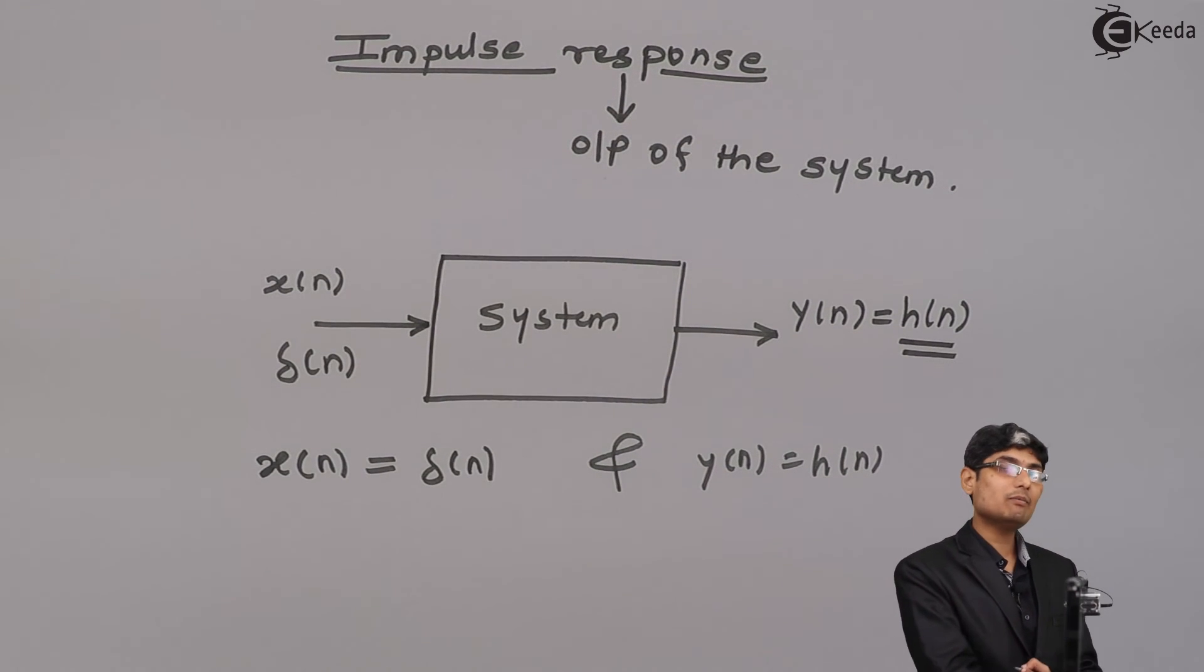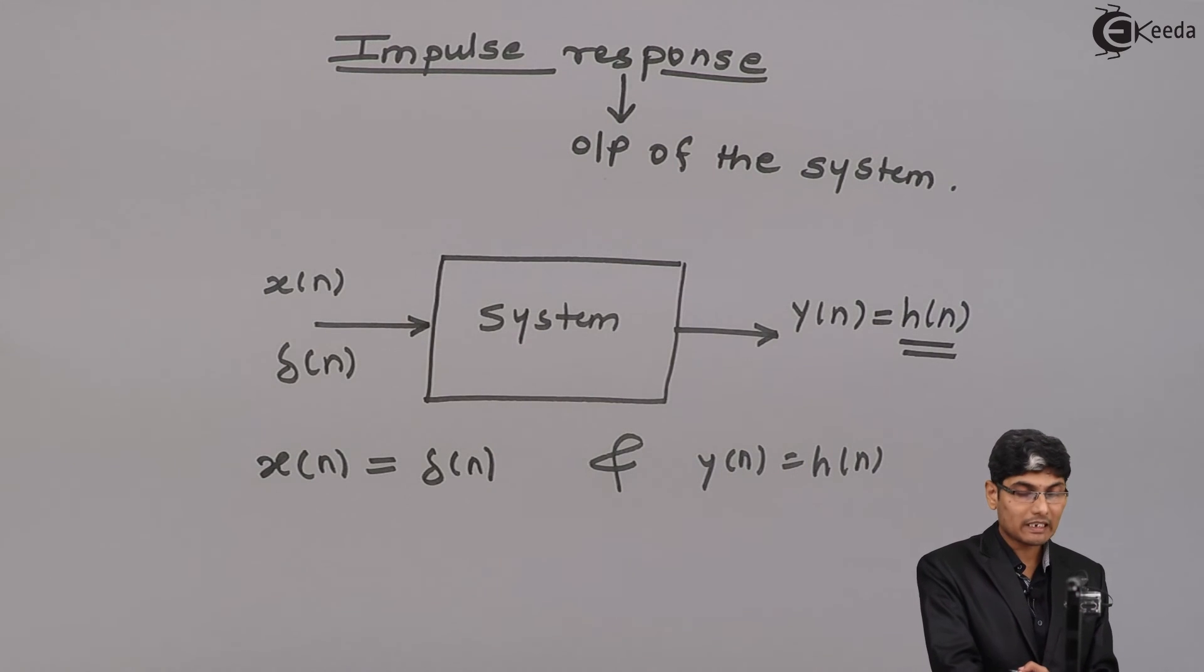So, whenever I say an impulse response it should immediately click that the inputs are all delta n and my output is h of n. So, y of n should be replaced by h of n and x of n should be replaced by delta n is what we do in impulse response.